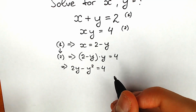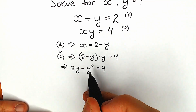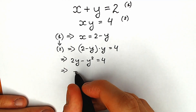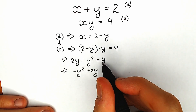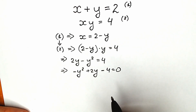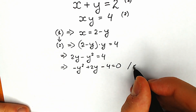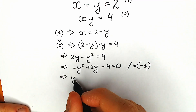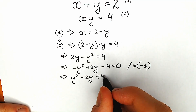It looks like this is a quadratic equation, but we prefer a different order — y squared first, then y. So let's rearrange: minus y squared plus 2y minus 4 equals 0. The final tricky move: let's multiply both sides by minus 1 to get y squared minus 2y plus 4 equals 0.